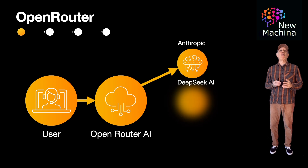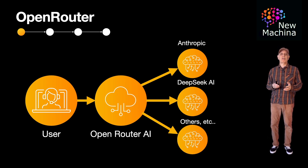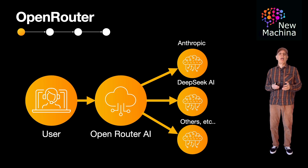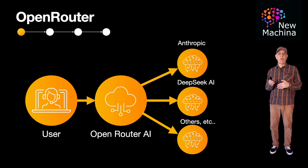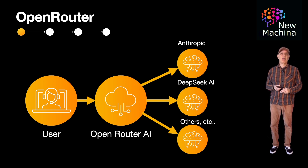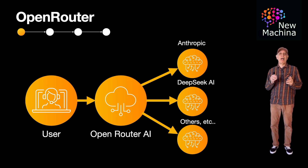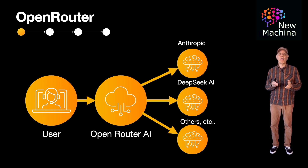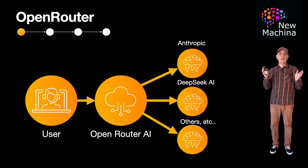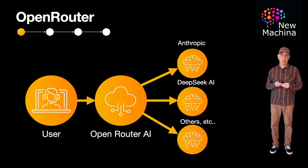In case you're not up on OpenRouter, it is an API gateway service in the LLM space that allows developers to access multiple large language models through a single API with a single API key. When you use OpenRouter, you don't need to get an account and API keys for all the LLMs you intend to use or try out. With your one OpenRouter account and API key, you can access hundreds of different LLMs.